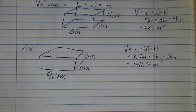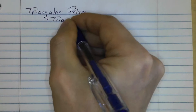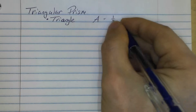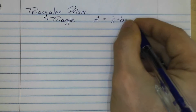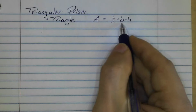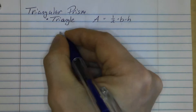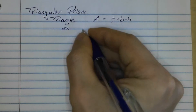The name of the section is Volume of Prisms, which means we have more than one prism to learn about. The next one is triangular prisms. Before we learn about those, we need to know how to find the area of a triangle. The formula is: area equals one-half times the base of the triangle times the height of the triangle — lowercase b and lowercase h, and you'll find out why in a moment.